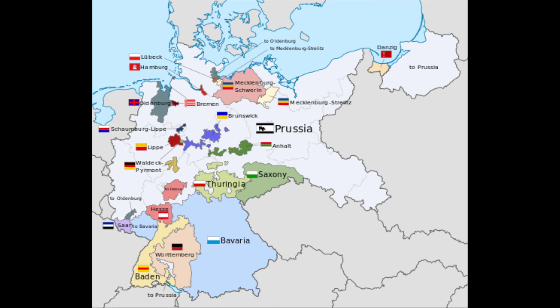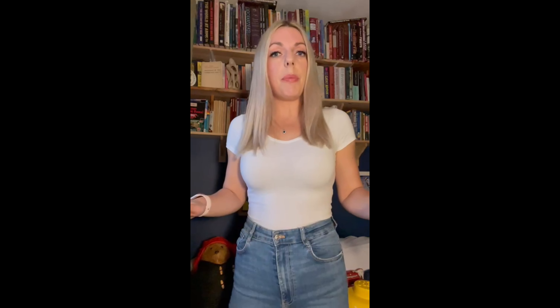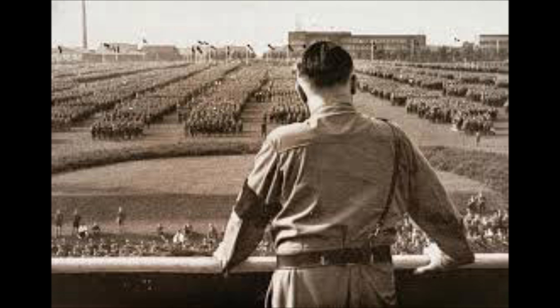The last thing Hitler did to gain political control was to get rid of the state governments. In Germany there were 18 different states called Länder, and they could oppose the national government and install their own local rules. Hitler wanted everyone doing the same thing — Gleichschaltung. The Länder parliaments were abolished completely in January 1934 and Reich governors took over the ruling of these localities.